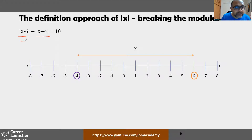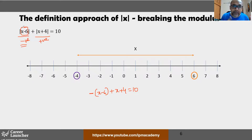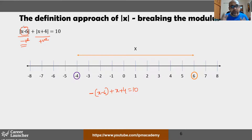Take x = 0 in this region: (x − 6) becomes −6, which is negative, but (x + 4) becomes 4, which is positive. So the equation without modulus is written as −(x − 6) + (x + 4) = 10. The negative sign on the first term comes from the definition: if the inside is negative, write minus of that value.